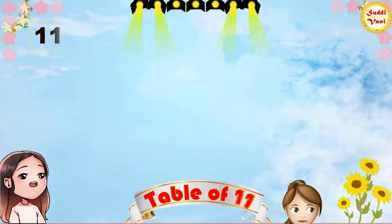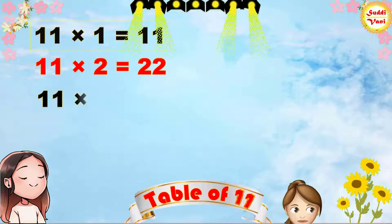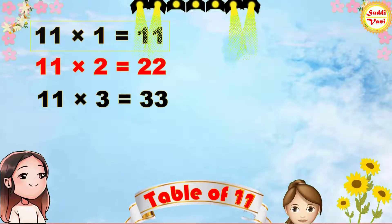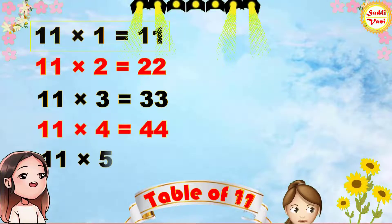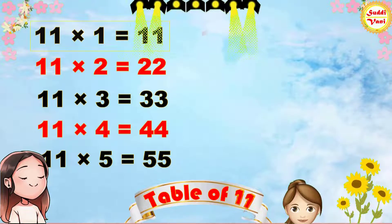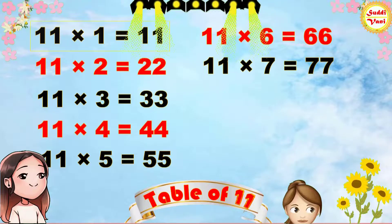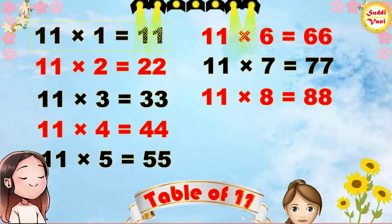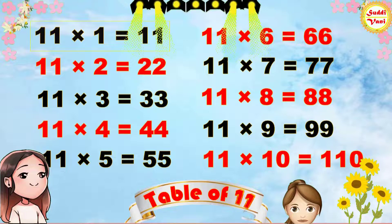Once again: 11 1s are 11, 11 2s are 22, 11 3s are 33, 11 4s are 44, 11 5s are 55, 11 6s are 66, 11 7s are 77, 11 8s are 88, 11 9s are 99, 11 10s are 110.